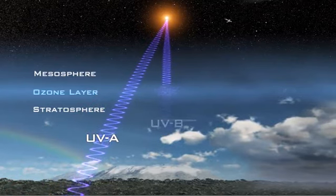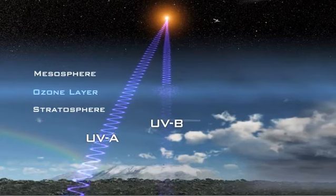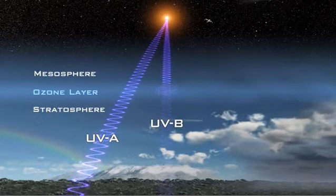But shorter wavelengths, called UVB, are the harmful rays that cause sunburn. Fortunately, about 95% of these harmful UVB rays are absorbed by ozone in the Earth's atmosphere.